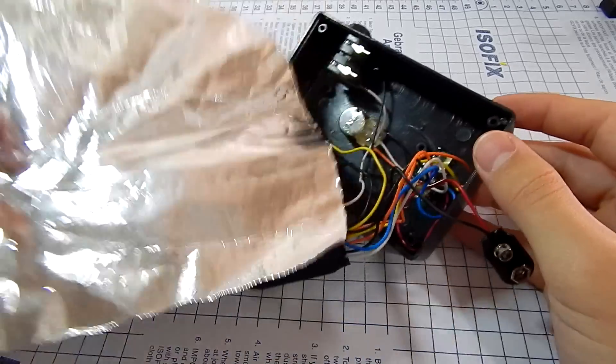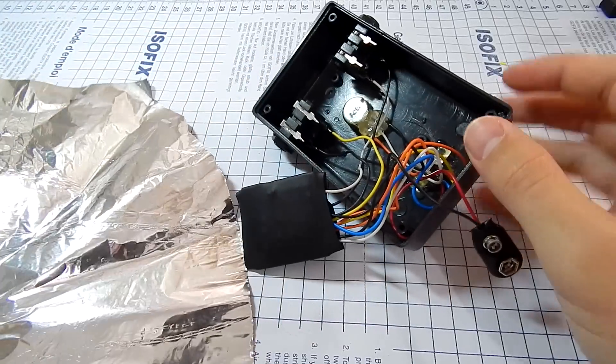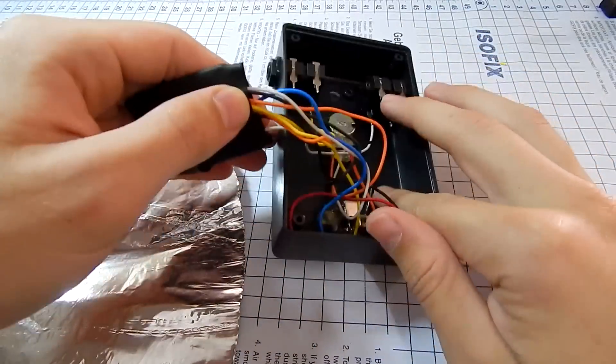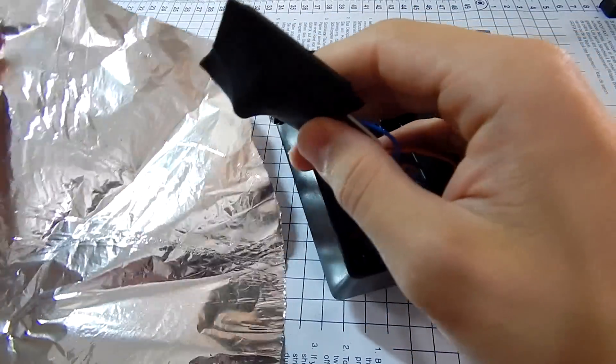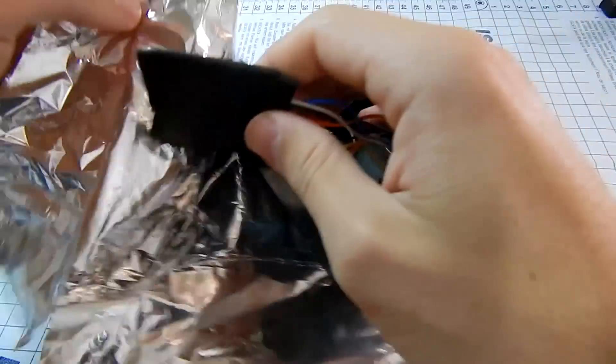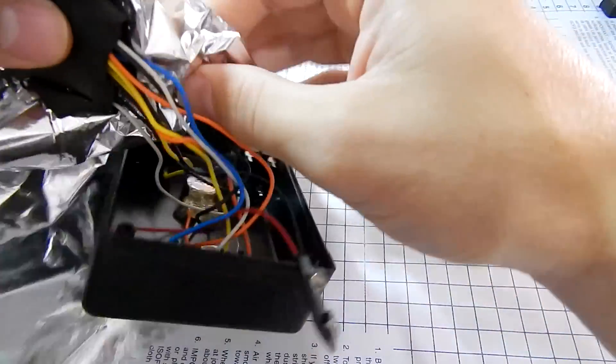Now comes a very important part: the electromagnetic shielding. It serves to eliminate electromagnetic noise that causes a lot of interference. For this, we'll wrap aluminum foil around the board and as many wires as possible.